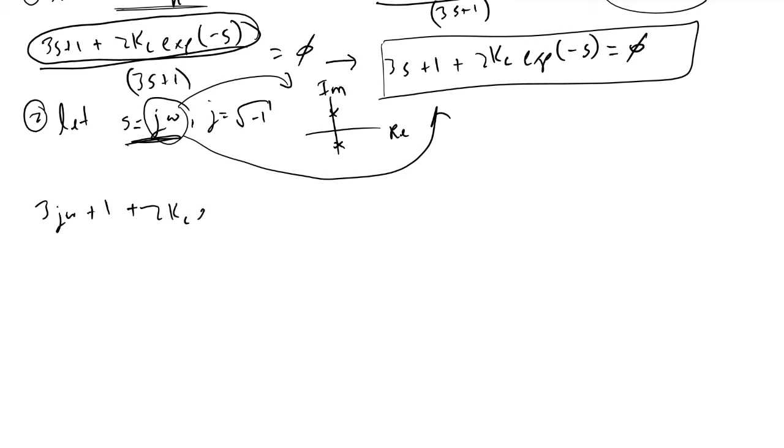If we recall Euler's formula, this term here is equivalent to cosine ω minus j sine ω, and continuing, what we would find...